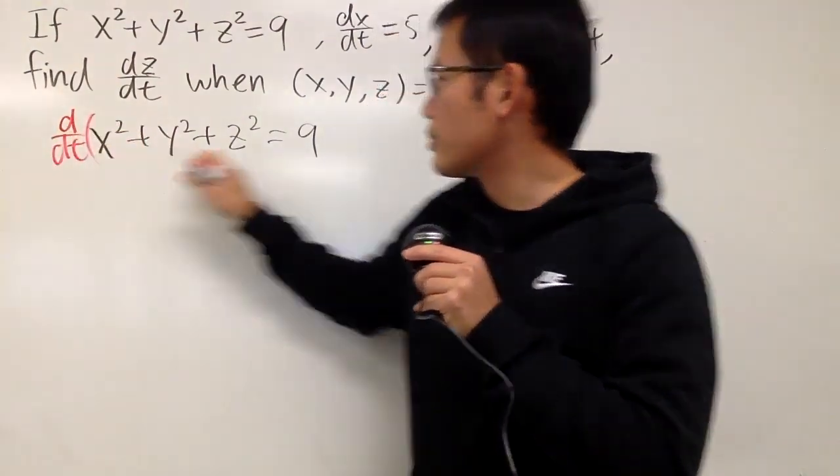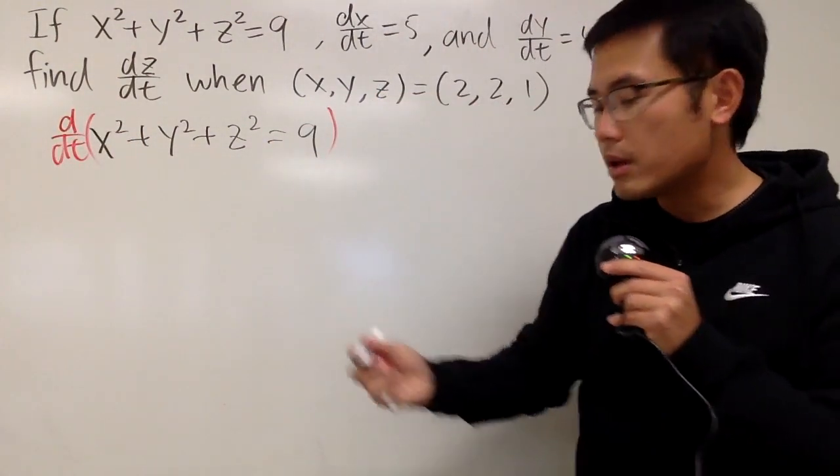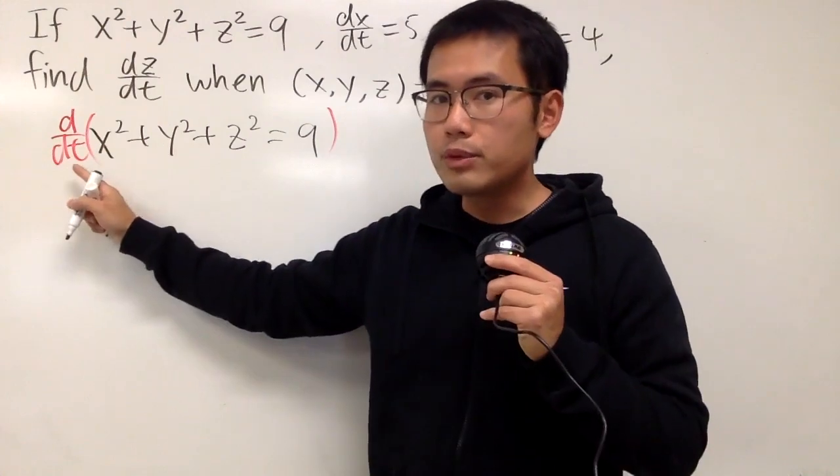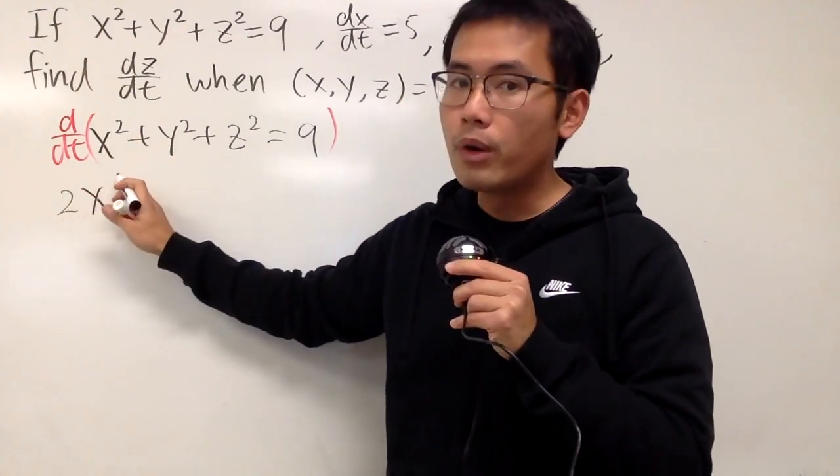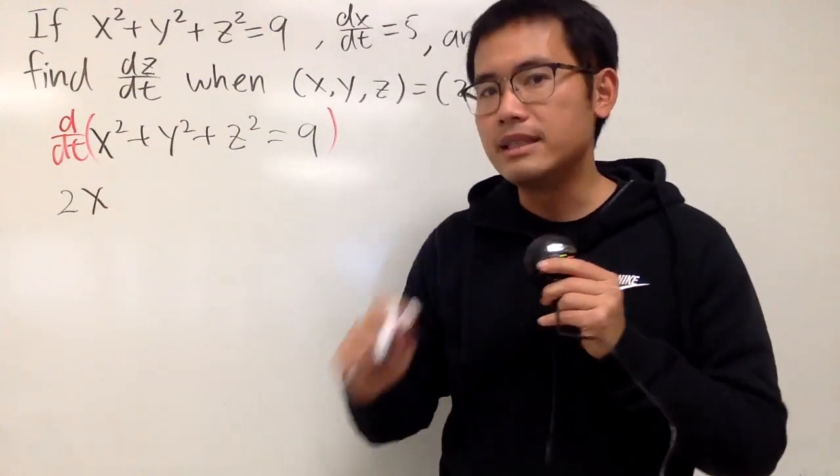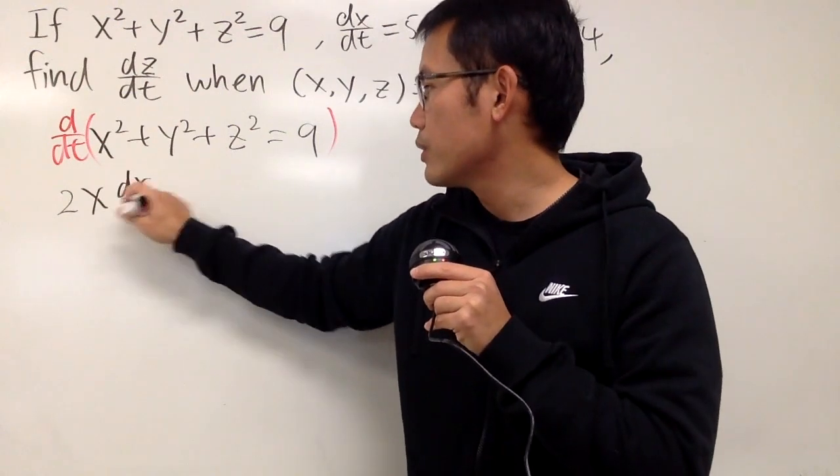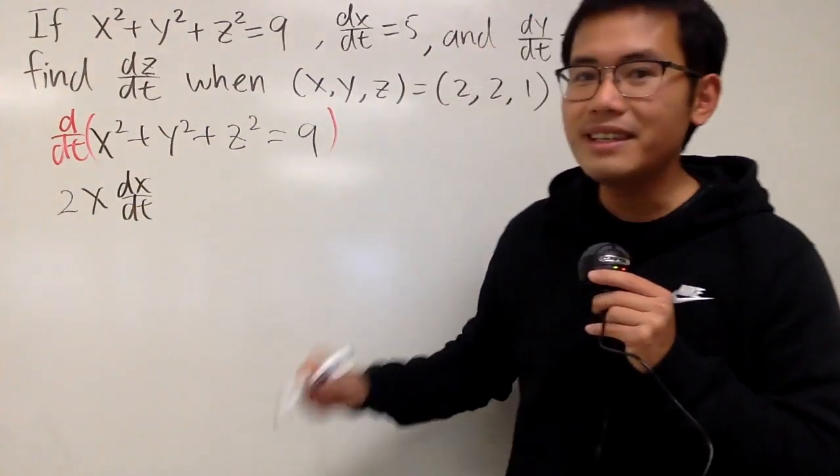So, d/dt throughout this right here, and remember, when we differentiate this with respect to time, you bring the 2 to the front, and then x to the first power, and we multiply it by dx/dt. So, that's how we squeeze out the dx/dt, and then we continue.